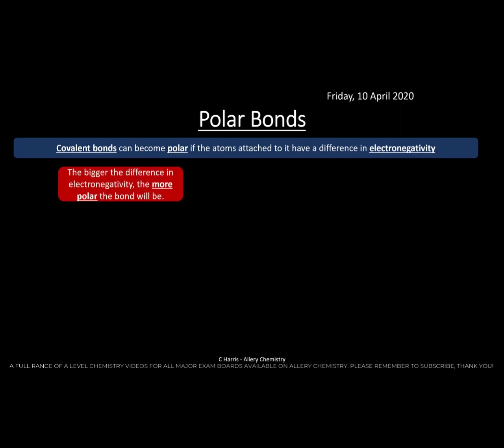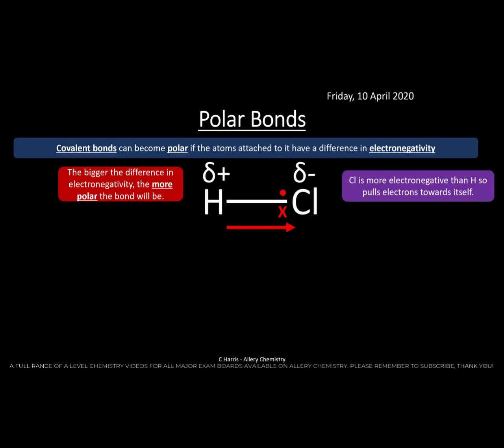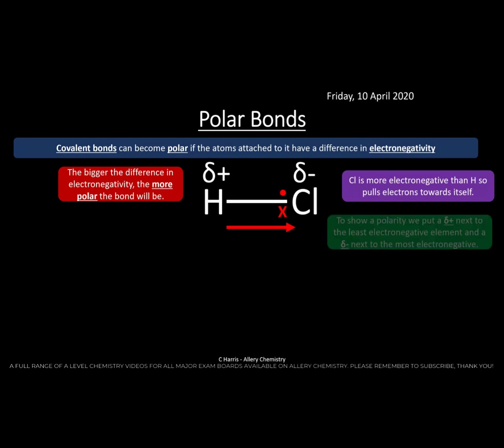Fluorine has a Pauling value of 4 and hydrogen has a value of 2.2, so there is a difference. If you bond hydrogen and fluorine together, one is more electronegative than the other, so we have a polar bond — one atom is pulling electrons towards itself. The bigger the difference in electronegativity, the more polar the bond. In HCl, chlorine pulls electrons towards itself, creating a permanent δ+ on the hydrogen and δ− on the chlorine.